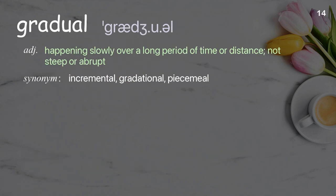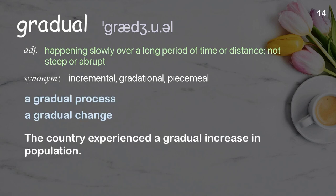Gradual. Happening slowly over a long period of time or distance; not steep or abrupt. Examples: a gradual process, a gradual change. The country experienced a gradual increase in population.